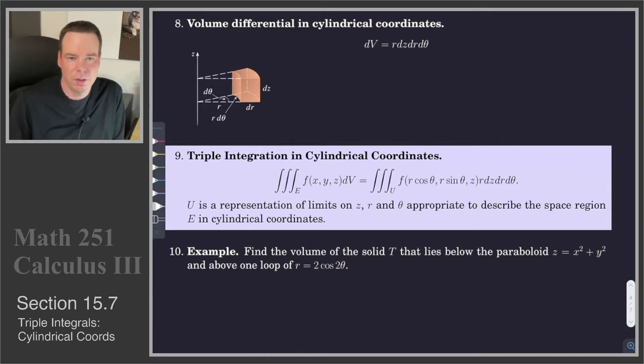Now we'll look at how to use cylindrical coordinates to do a triple integral. Let's first start with the volume element, since any triple integral is integrating a function over a region against the volume element. We need to know what is the volume element in cylindrical coordinates. Let's look at a visual for this.